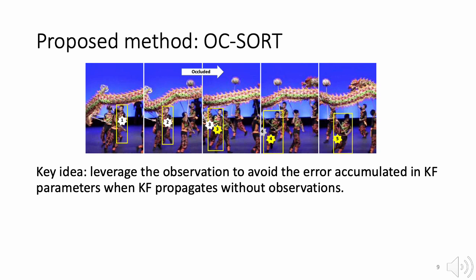We should leverage our observations to avoid the error accumulated in Kalman filter. Just as shown in the figure, between the second and third image, the target person is occluded. The white stars are by SORT for the center position estimation, and yellow stars are by OC-SORT.